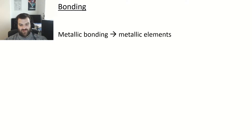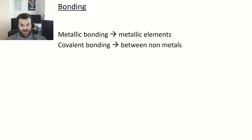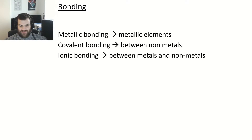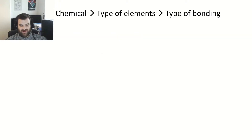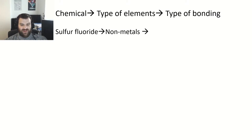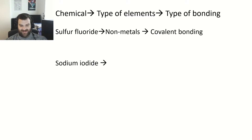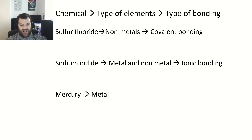Starting with a general overview: metallic bonding is found in metals, covalent bonding tends to be found between non-metals, and ionic bonding tends to be found between metals and non-metals. There are exceptions, so we use this as a starting point. For example, sulfur fluoride has non-metals so it's predicted to have covalent bonds; sodium iodide has a metal and non-metal so it's predicted to be ionic; mercury is a metal so it has metallic bonding.